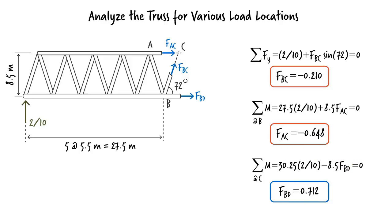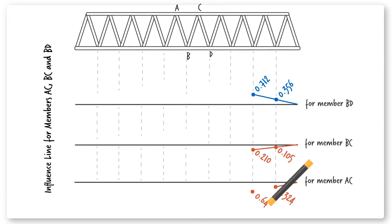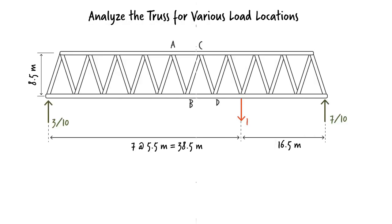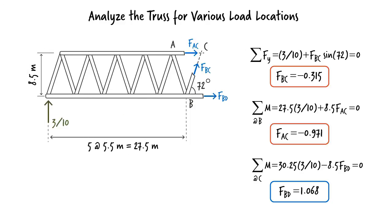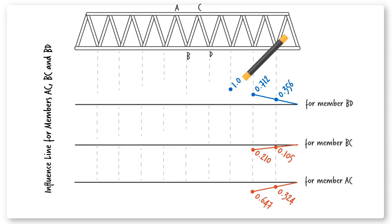Updating the influence lines, we continue moving the unit load along the bottom joints. In each step, we determine the support reactions, then cut the truss, write the equilibrium equations, and determine the unknown forces before updating the influence lines.